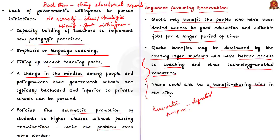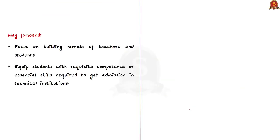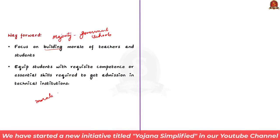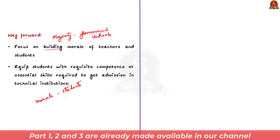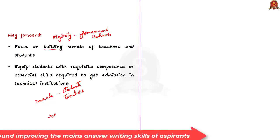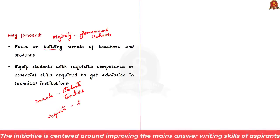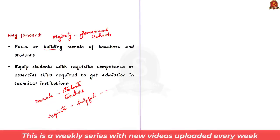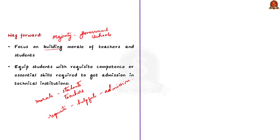Now, what is the way forward? Rebuilding institutions may be a tougher task, but the state cannot simply escape the responsibility of improving education in government schools, as an overwhelming majority of children study there. The state should focus on building the morale of teachers and students, and equip students with the requisite competence and essential skills needed to gain admission in various higher technical institutions. With this, we have come to the end of this particular news discussion.